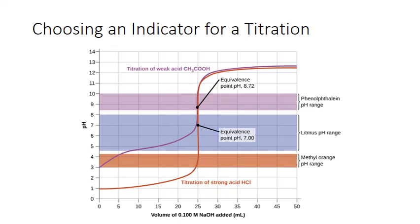For the weak acid titration curve, only phenolphthalein's color change occurs within the vertical portion right around the equivalence point, making it the best choice. If litmus were used, the color change would occur between 5 and 10 milliliters, well before the equivalence point. With methyl orange, the color change would actually occur before any base was added at all, making it completely unsuitable for a weak acid titration.